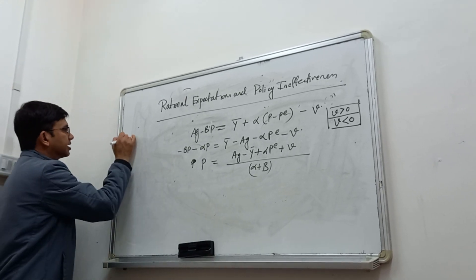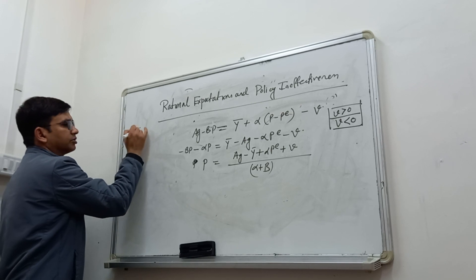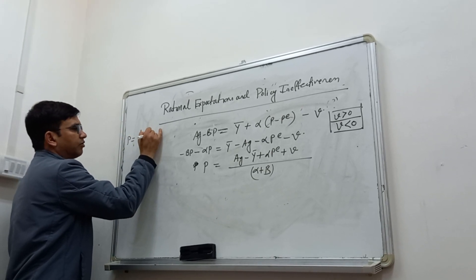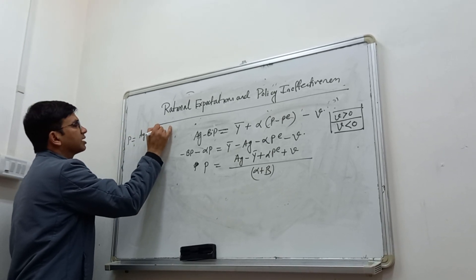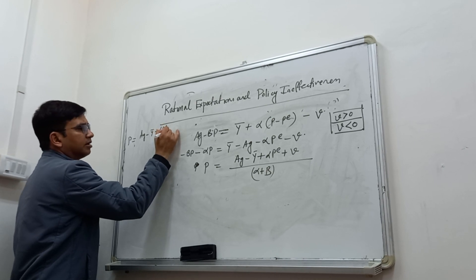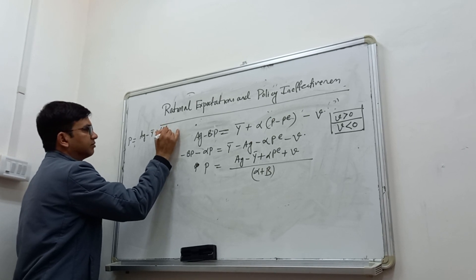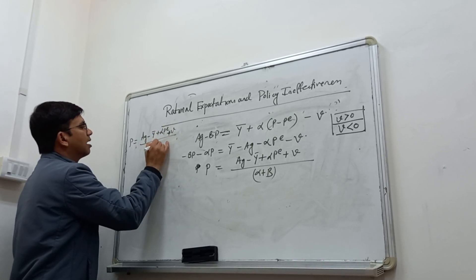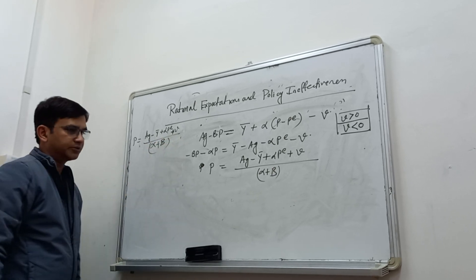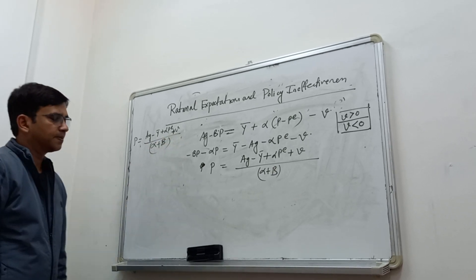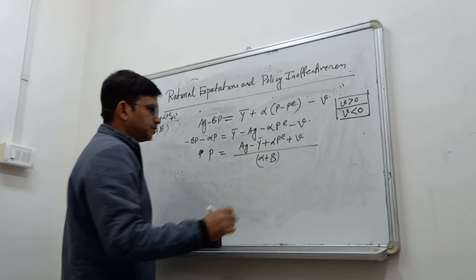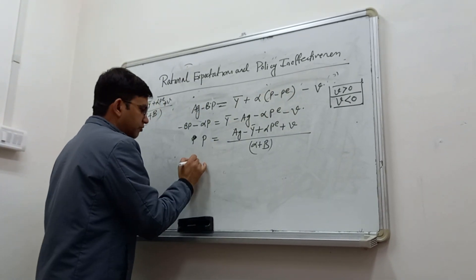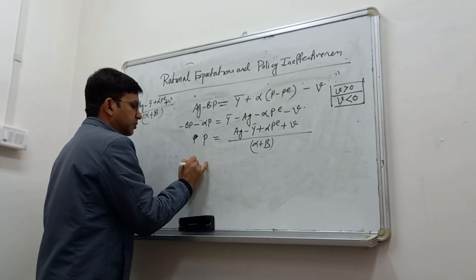We write the equation with P on the left-hand side: P = (AG − Ȳ + αPE + V) / (α + B). Now, if we form the expectation of this equation, we take the expected value E of both sides.